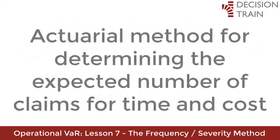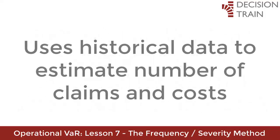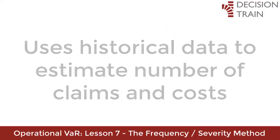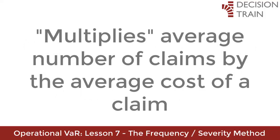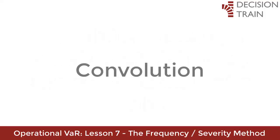The frequency-severity method in its original form for the insurance industry is an actuarial method for determining the expected number of claims an insurer will receive during a given period of time and how much the average claim will cost. It uses historical data to estimate the average number of claims and the average cost of each claim. The method multiplies — in quotes — the average number of claims by the average cost, because in reality the operation used is called convolution, not simple multiplication.